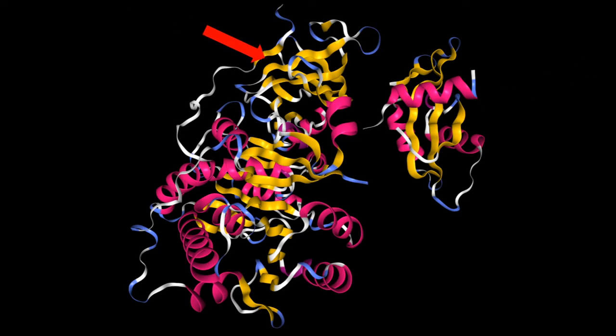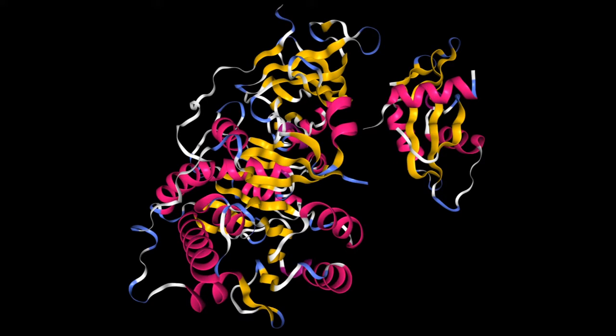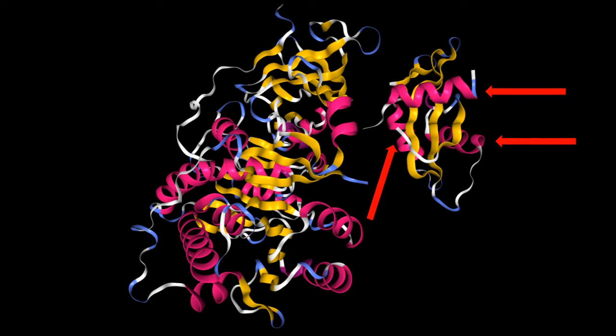The N-terminal domain contains a beta-barrel and a five-layered alpha-beta-alpha-beta-alpha structure. The C-terminal domain has five beta strands and three alpha helices. A disordered loop connects the two domains.